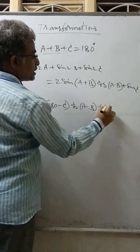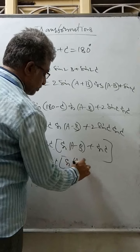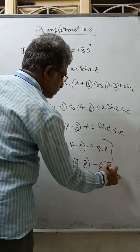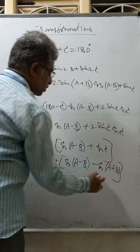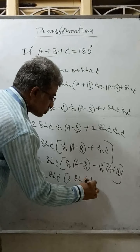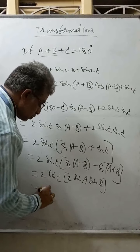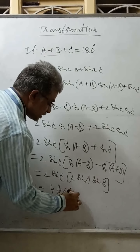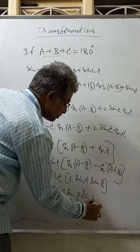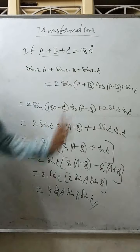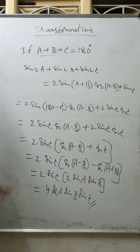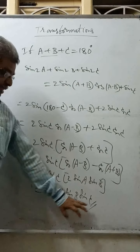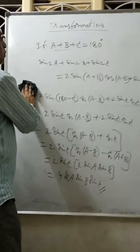Now instead of C, substituting 180 minus (A+B). Cos(180-θ) equals minus cos θ, so we get 2 sin C [cos(A-B) minus cos(A+B)]. Using our last formula, cos(A-B) minus cos(A+B) equals 2 sin A sin B. So the result is 2 sin C · 2 sin A sin B = 4 sin A sin B sin C. Therefore sin 2A plus sin 2B plus sin 2C equals 4 sin A sin B sin C.